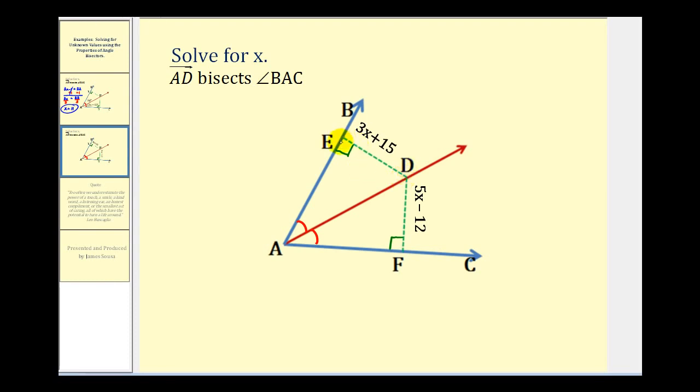In other words, these two green segments are congruent. Therefore, we can conclude that three x plus 15 must equal five x minus 12, allowing us to determine the value of x.